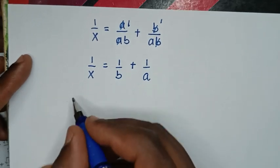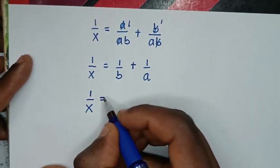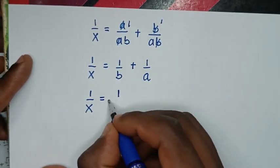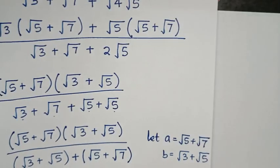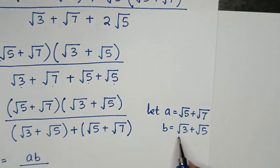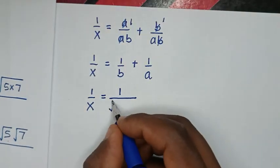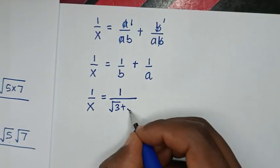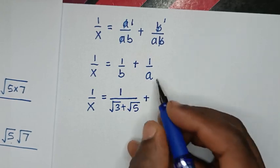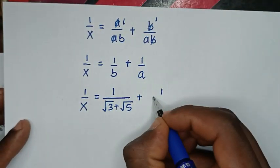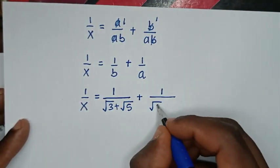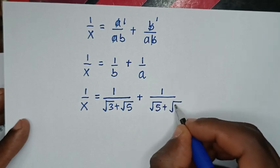Then in the next step, 1/x = 1/b. Before, we let b = √3 + √5, so here it is 1/(√3 + √5), plus 1/a, where a = √5 + √7, so it is 1/(√5 + √7).